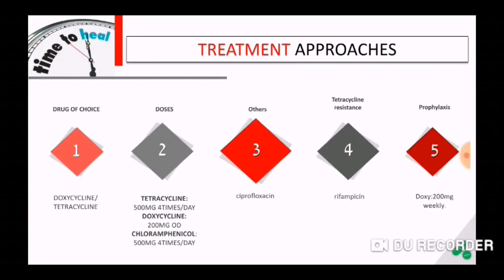Treatment approaches. The major antibiotic effective against this Rickettsia species is the tetracycline antibiotic. The drug of choice is doxycycline or tetracycline. The normally given dose of tetracycline is 500 mg four times per day. Doxycycline is given at 200 mg once daily. Chloramphenicol is also an option, given at a dose of 500 mg four times per day.